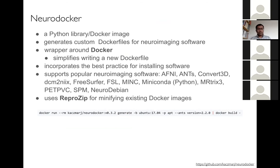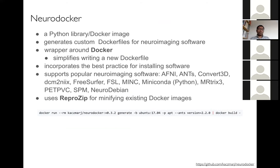You can also use ReproZip, which minimizes containers to the essentials for just running an app. Here's one example of installing a very specific version of ANTs into a container based on an Ubuntu image. If you can run Docker — which you can on almost any operating system today — you can use NeuroDocker to create your own personal neuroimaging environment specific to the tools you need for your platform.